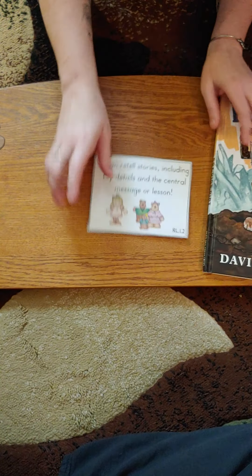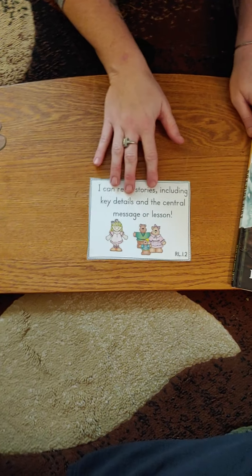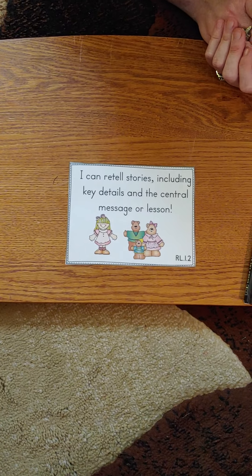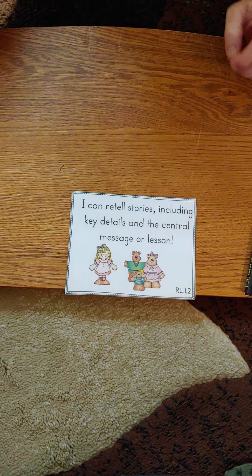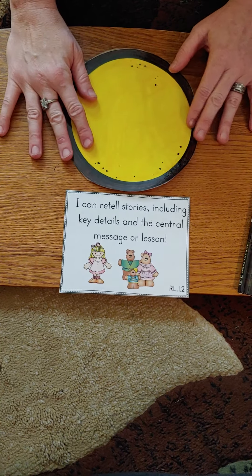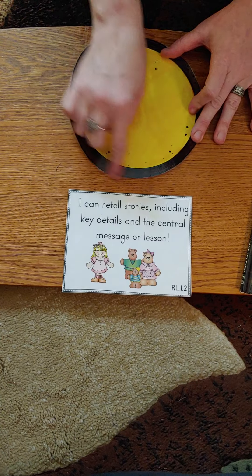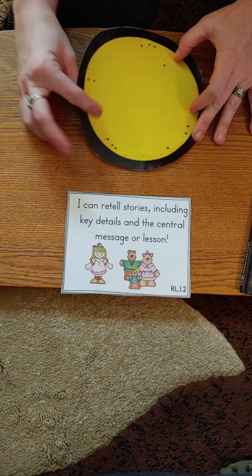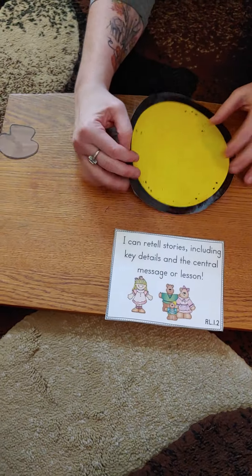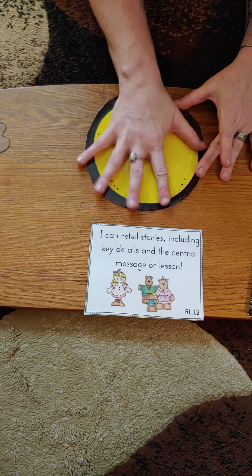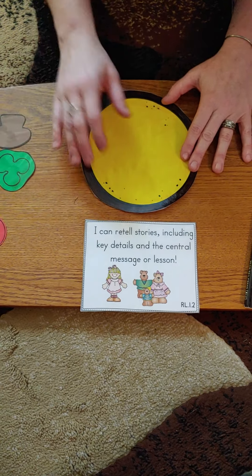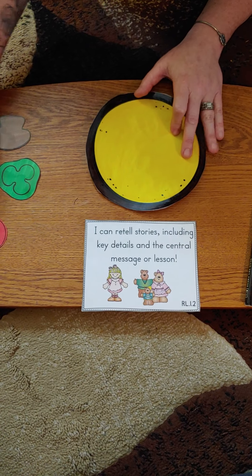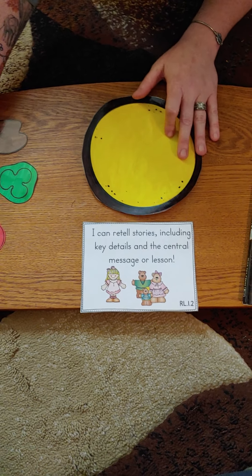Going back to our standard: retell the story, including key details and the central message. So this is what I've always used in the classroom — pizza. The pizza is the main idea of what the whole story is about. Obviously, Roy likes dirt. That's what our whole story is going to be about. Now, the key details are the ingredients, so we're going to give three key details of the story.